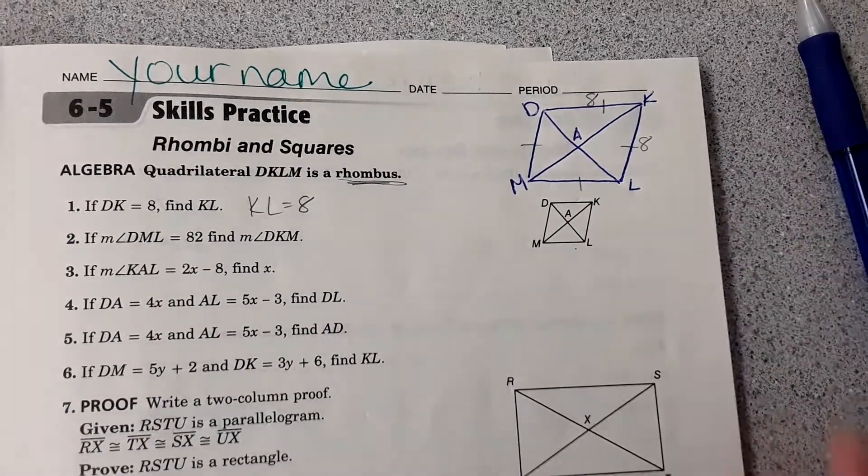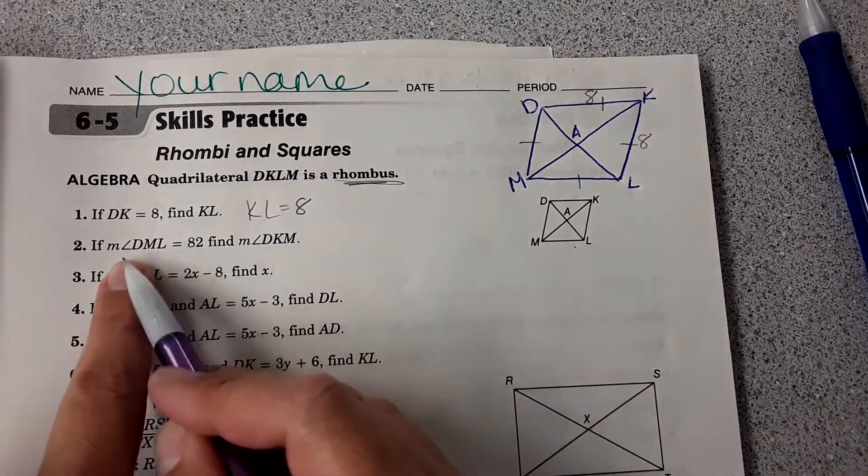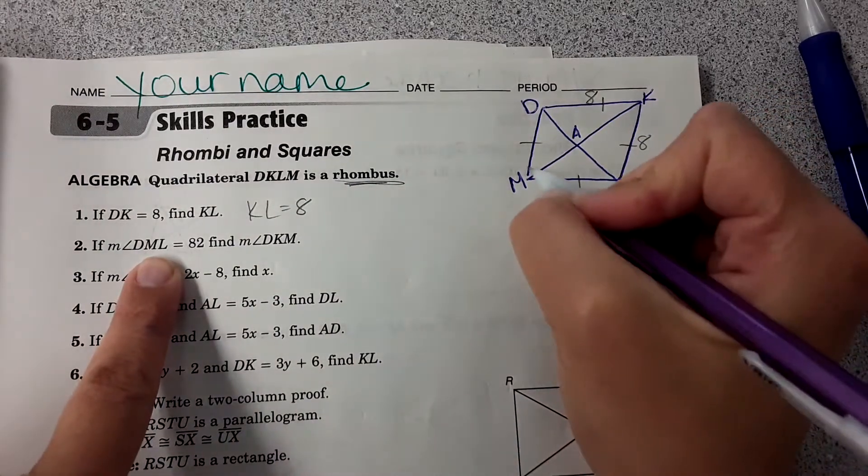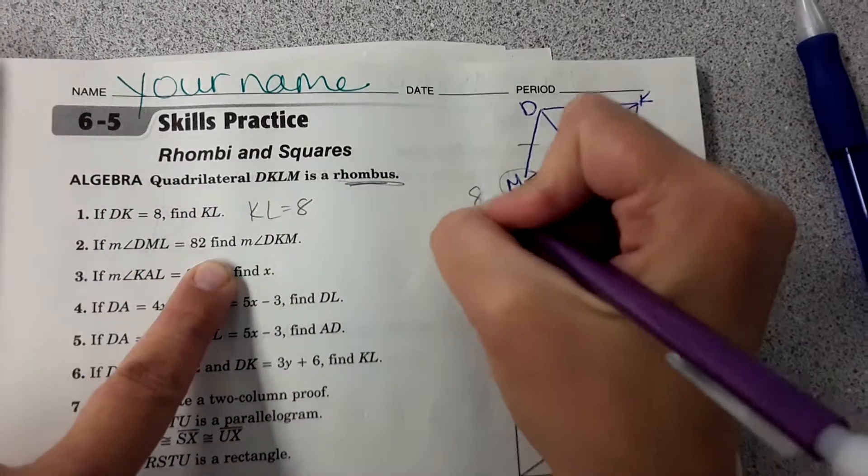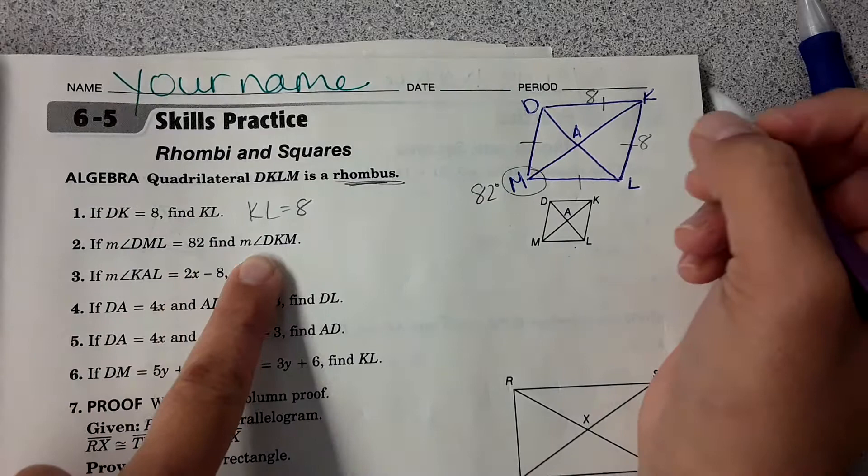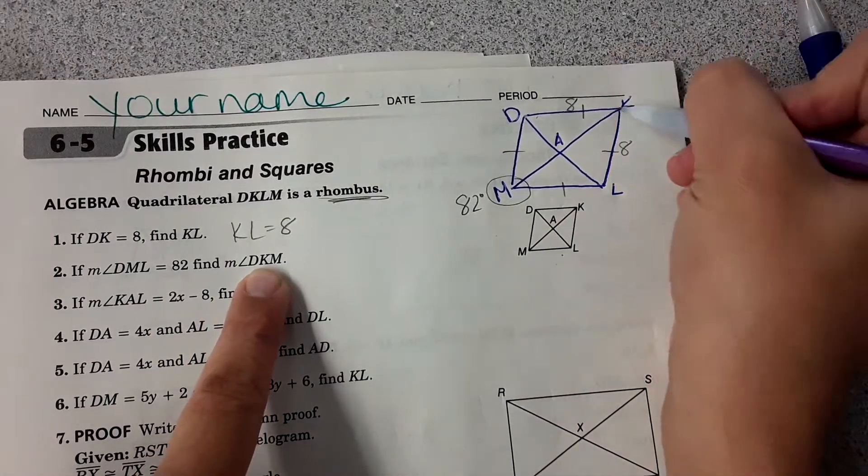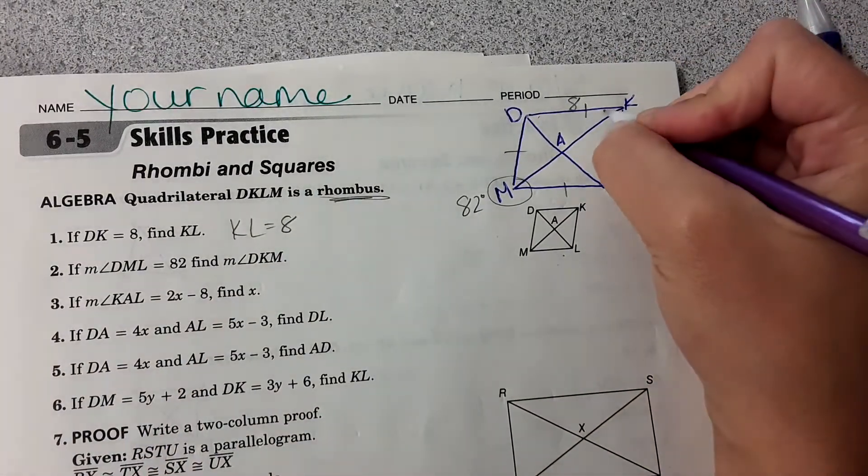Then number two, it says find the measure of DML. So this angle here is 82 degrees. Find the measure of DKM, so just this part right here.